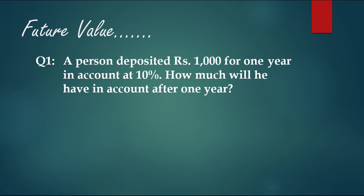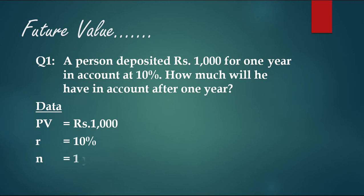The data extraction is as follows: the present value (PV) is 1000 — the amount the person is depositing today. R, the rate, is 10%. n is one year. We need to calculate the future value after one year.